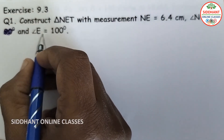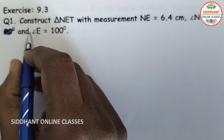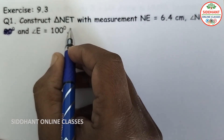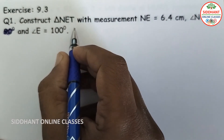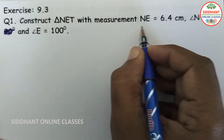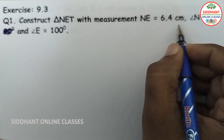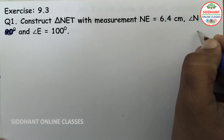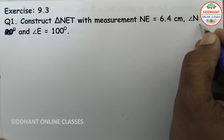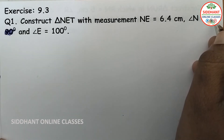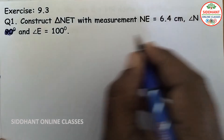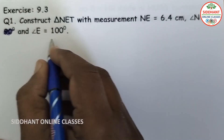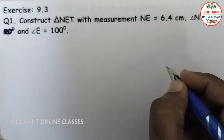Exercise 9.3, Question number 1. Construct triangle NET with measurements NE 6.4 centimeters, angle N equal to 50 degrees and angle E equal to 100 degrees.